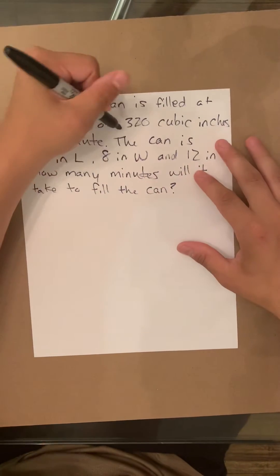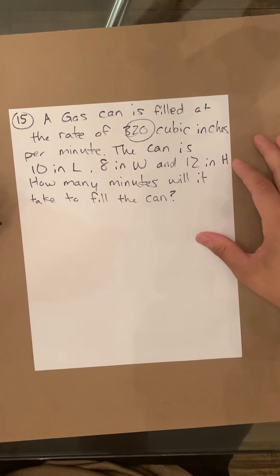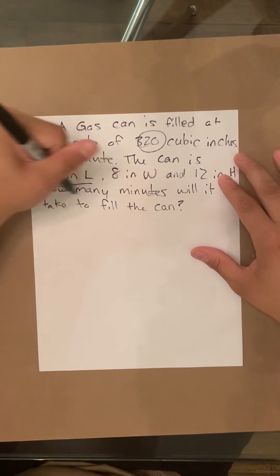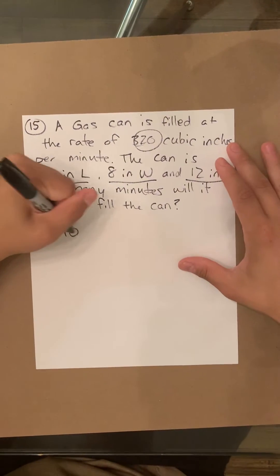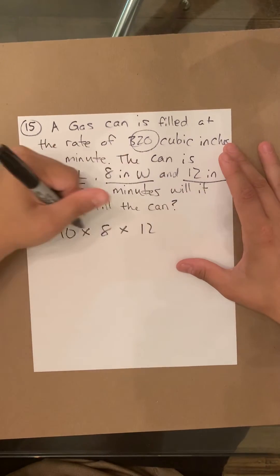So the important thing to remember is 320 per minute, and then we need to find out what the total cubic inches of the can is. The way we do that, 10 inches length, 8 inches wide, 12 inch height. So that's going to be 10 times 8 times 12. Length times width times height.